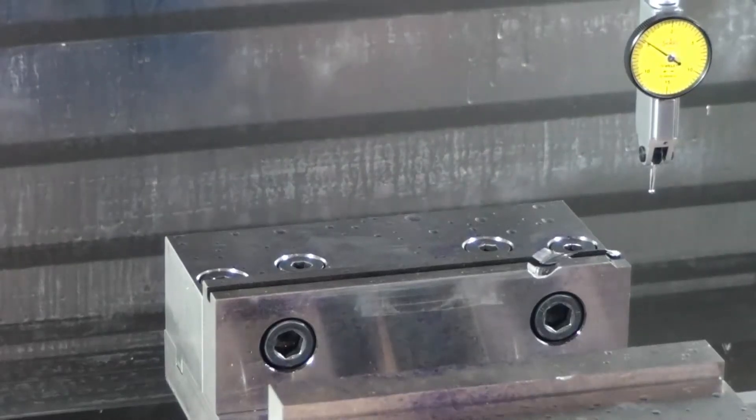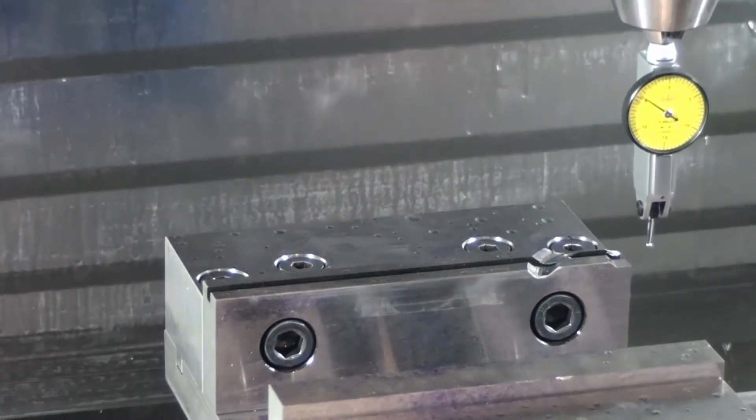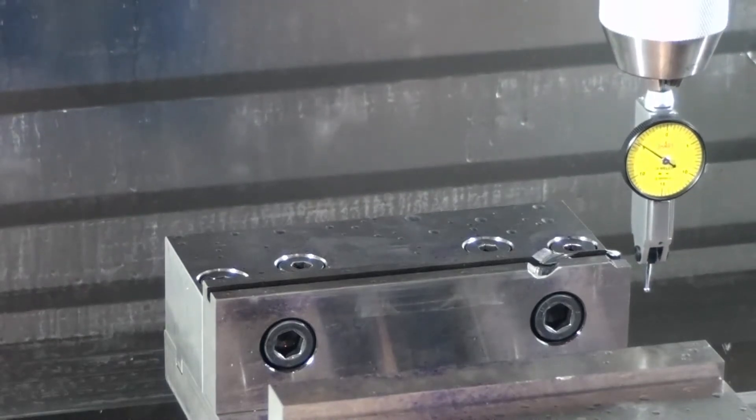Checking your vise alignment. In this case, handle jog ten thousandths in Z, and I bring the tool down. I bring the indicator down just inside the vise.